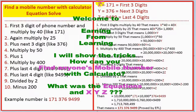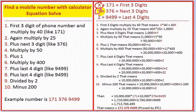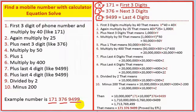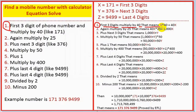This is x, y, and z. X means the first three digits. Here is the example phone number: 171-376-9499. The first three digits are 171, the next three digits are 376, and the last four digits are 9499.